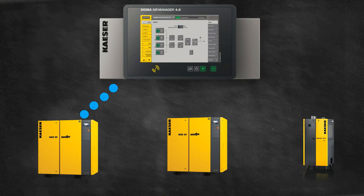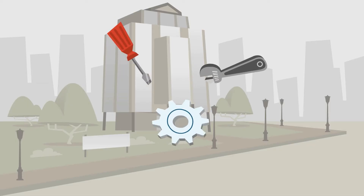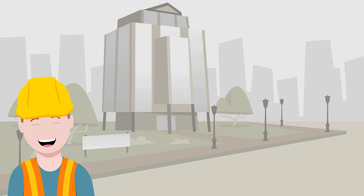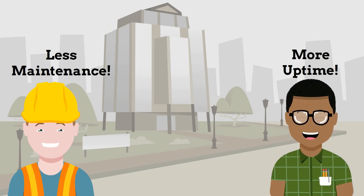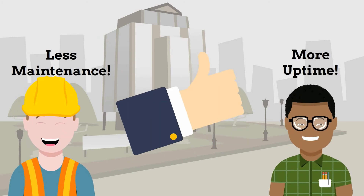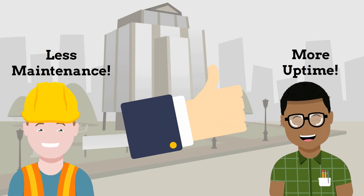Kaeser's Sigma Air Manager 4.0 is a master controller designed to monitor and control an entire compressed air system. It optimizes system efficiency and ensures a reliable supply of compressed air, no matter how demand may vary.